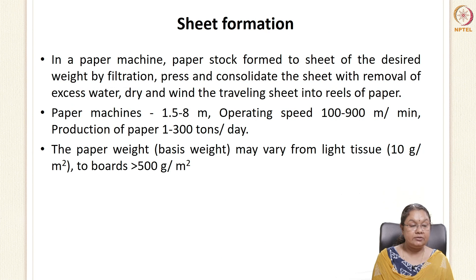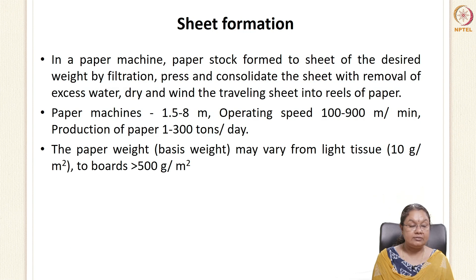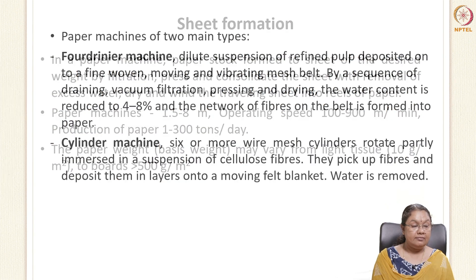After bleaching, the pulp is converted to sheet in the paper machine. The paper stock is formed into sheets of desired weight by filtration, pressing, and consolidation with removal of excess water. Paper machines are generally 1.5 to 8 meters wide, operating at 100 to 900 meters per minute, producing 1 to 300 tons per day. Paper weight can vary from light tissue paper at 10 grams per square meter to boards at more than 500 grams per square meter.